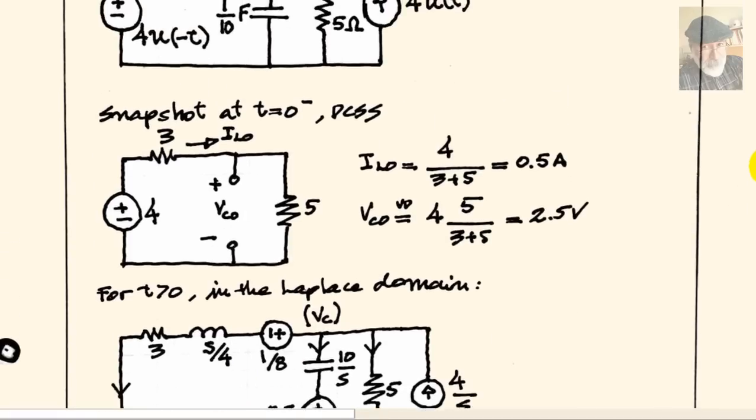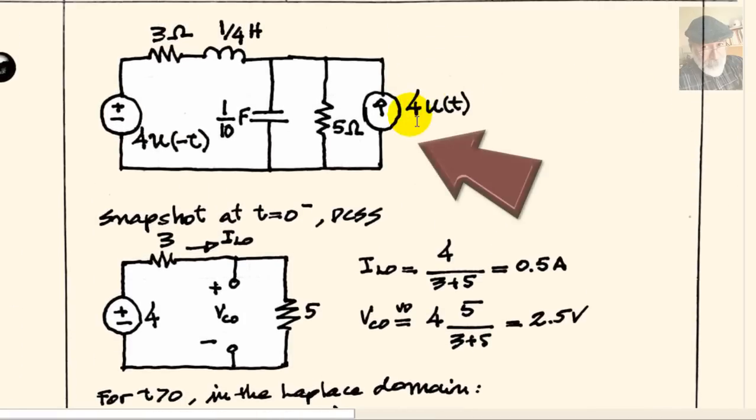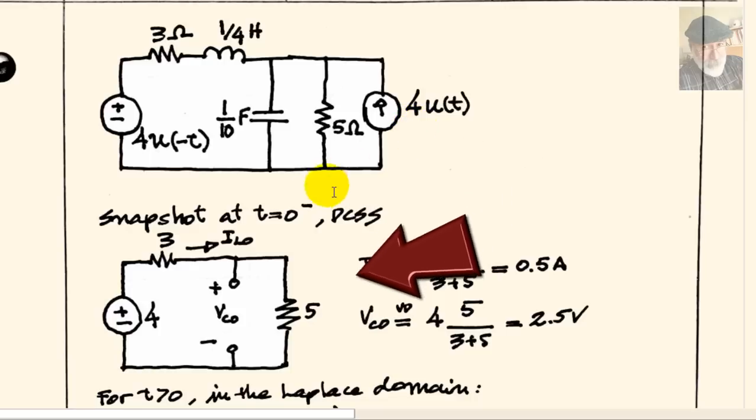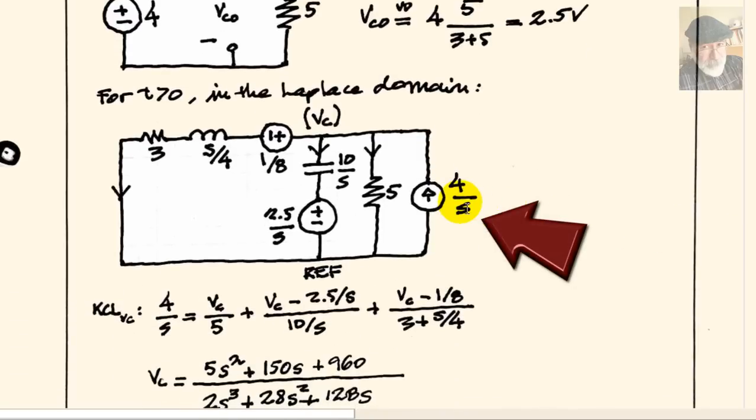The case of the current source on the far right is the opposite, you see. That source value is zero and has been zero from t minus infinity all the way up to and right before t equals zero. That's why in the snapshot at zero minus right before zero, the value of that current source is zero. That's why that source does not show here in the snapshot at t equals zero minus. It is not there. It's an open circuit. But in the representation of the circuit for t after zero, of course, this is a 4 amps current source that in the Laplace domain becomes 4 over s, as you can see there.